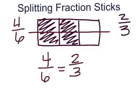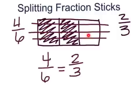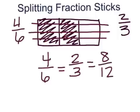Now I'm going to further divide up this rectangle by adding in two more lines. By adding two more lines, I have created a new denominator. Counting all the parts, my new denominator is going to be twelfths. How much of this is shaded? Counting the shaded parts, I get eight. My new fraction is eight-twelfths, and it is equal to both four-sixths and two-thirds, because they are all the same size.